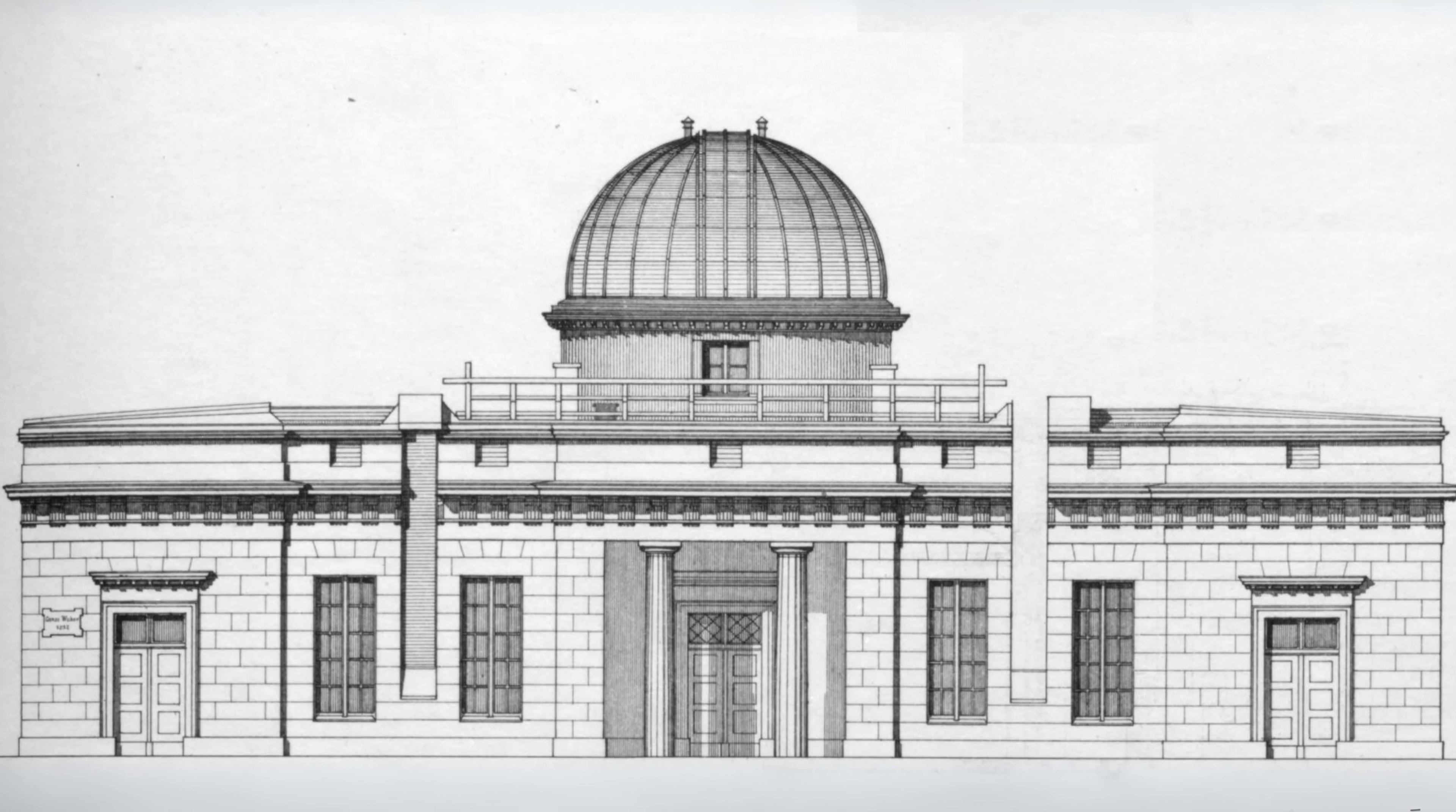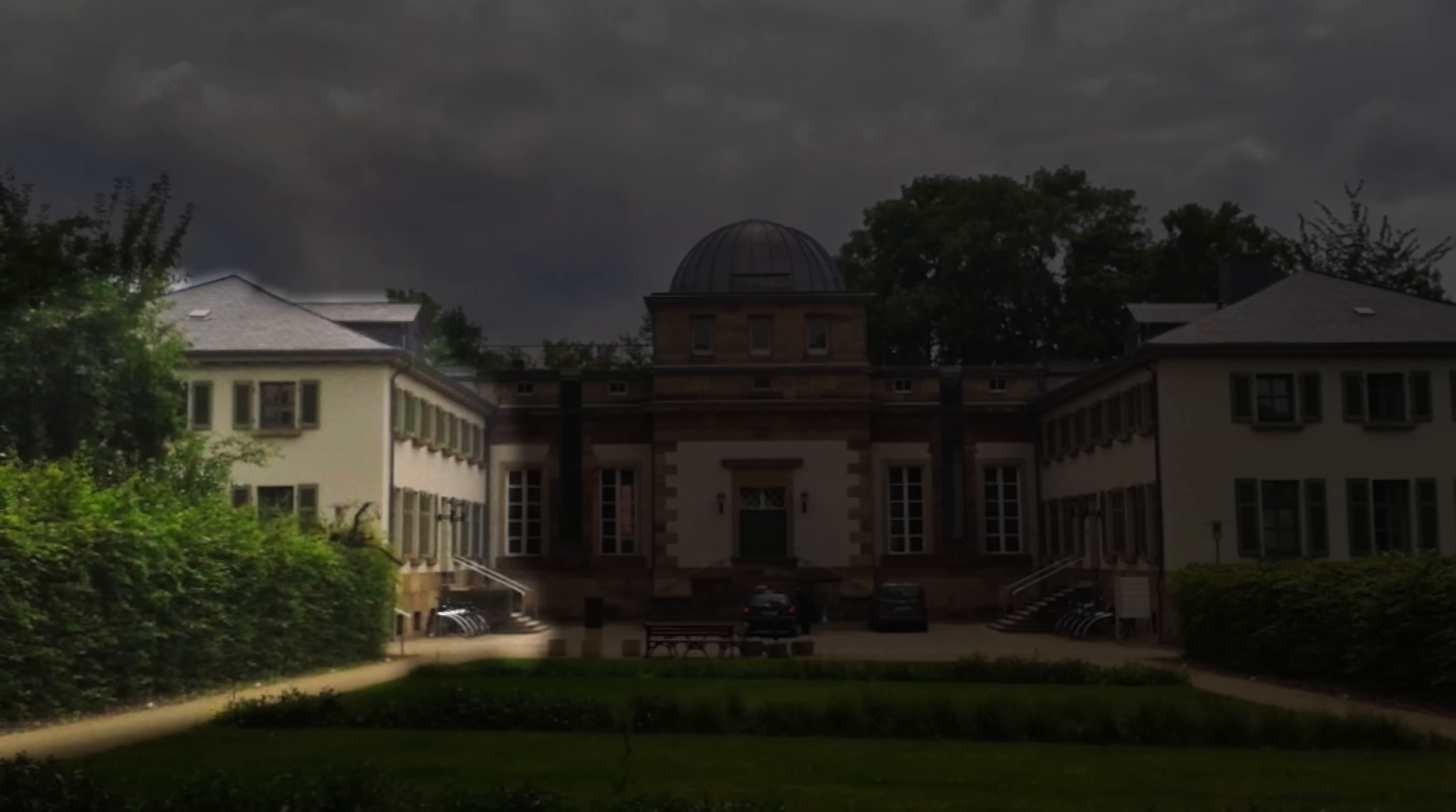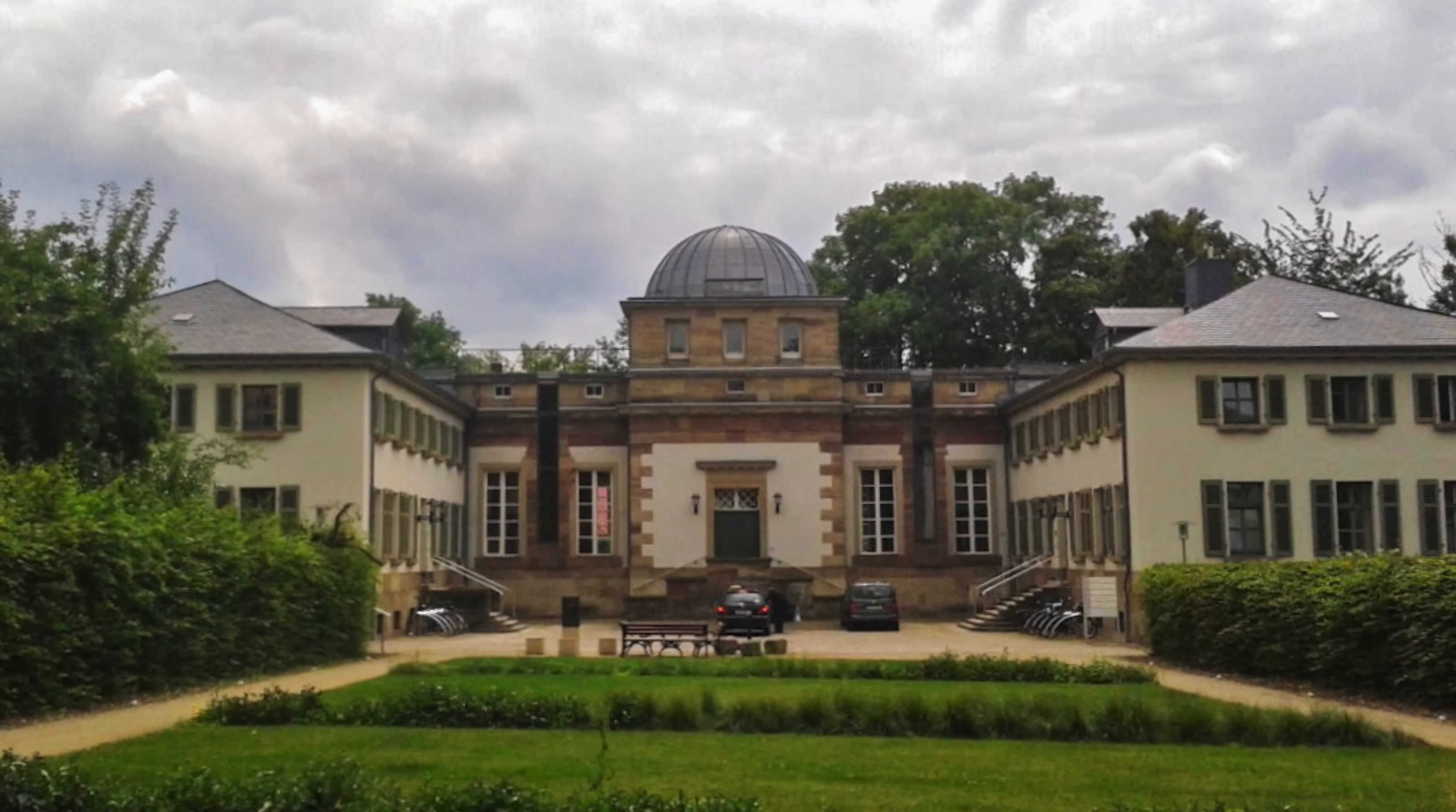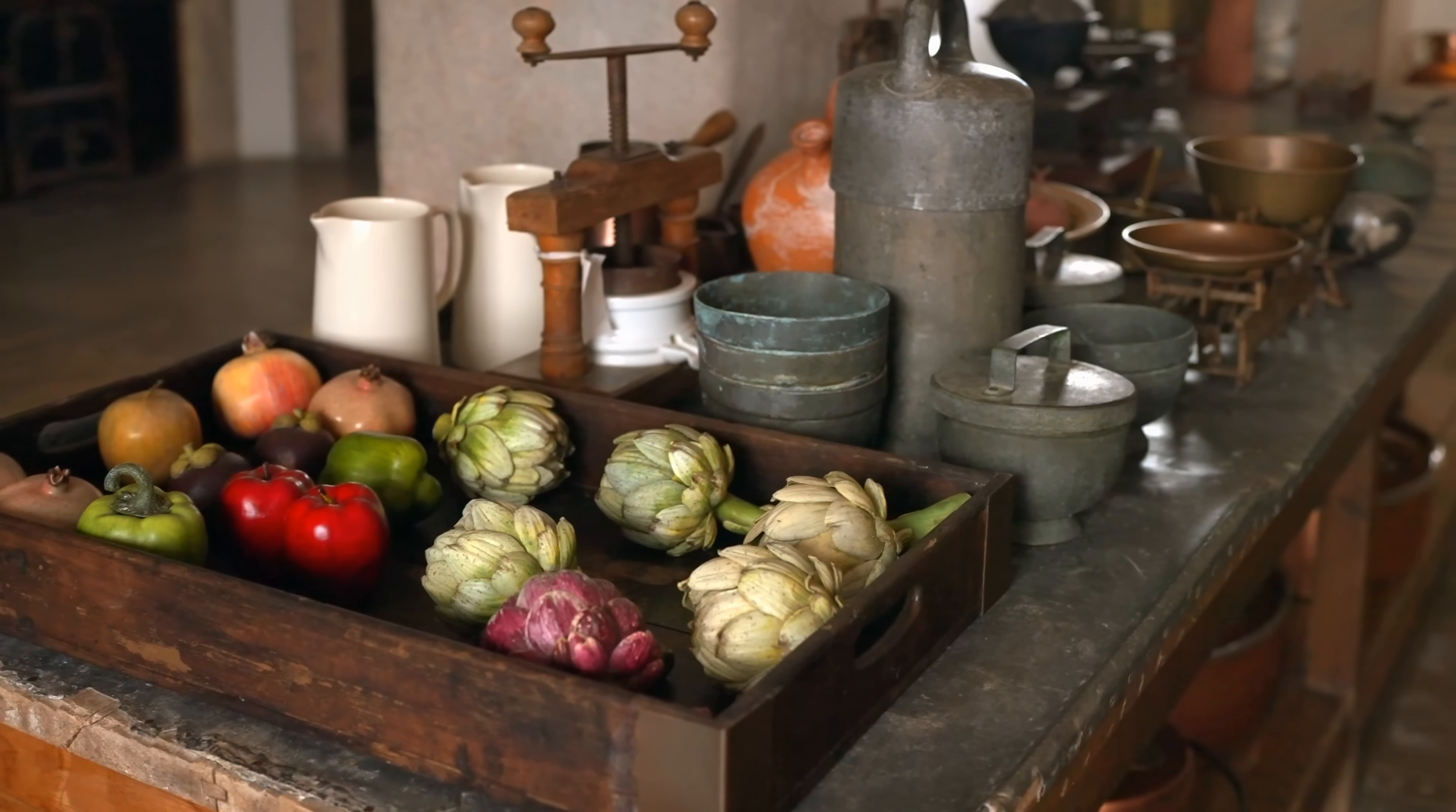In 1816, they moved into the new Göttingen Observatory, which included a residential wing as much of the work required nighttime observations. Carl's 74-year-old mother, who was immensely proud of her son, joined them the following year, nine years after the death of Carl's father. She was a simple woman who didn't feel comfortable eating in her son's grand dining room and preferred to eat in the kitchen with the servants.